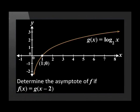Let's try another question together. Determine the asymptote of f if f(x) = g(x-2). x-2 represents a horizontal shift of 2 units to the right, so our asymptote and all other coordinates will move 2 to the right.